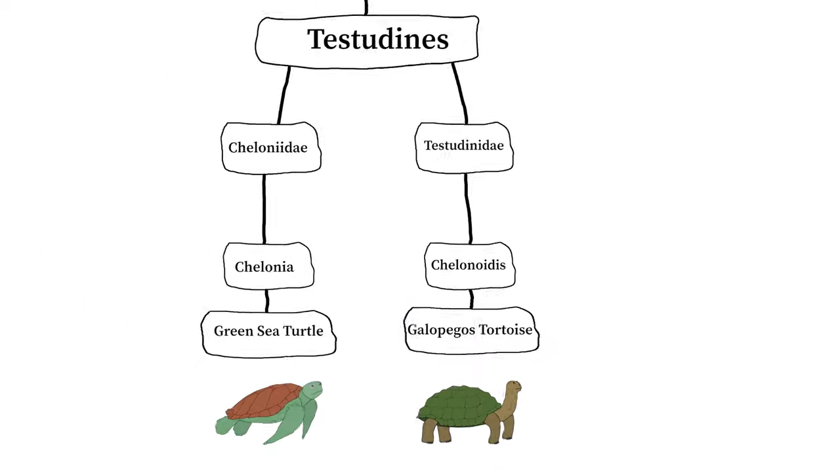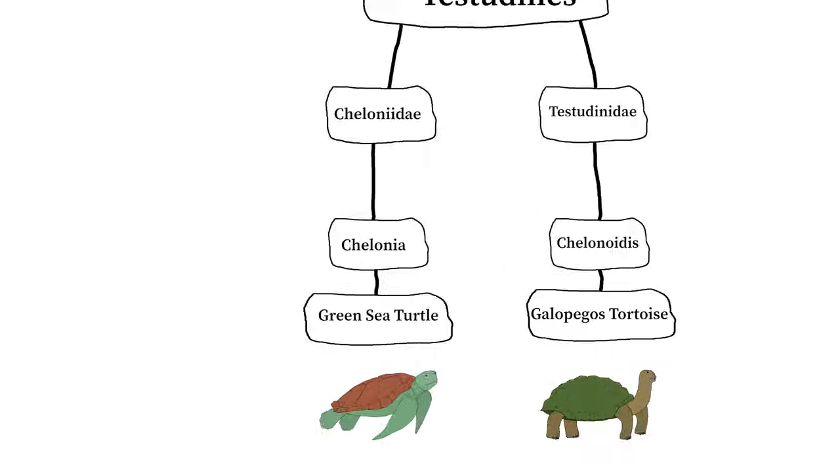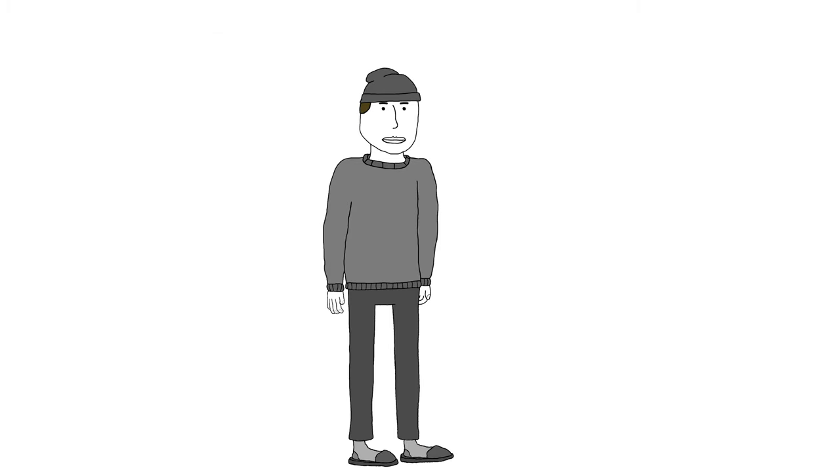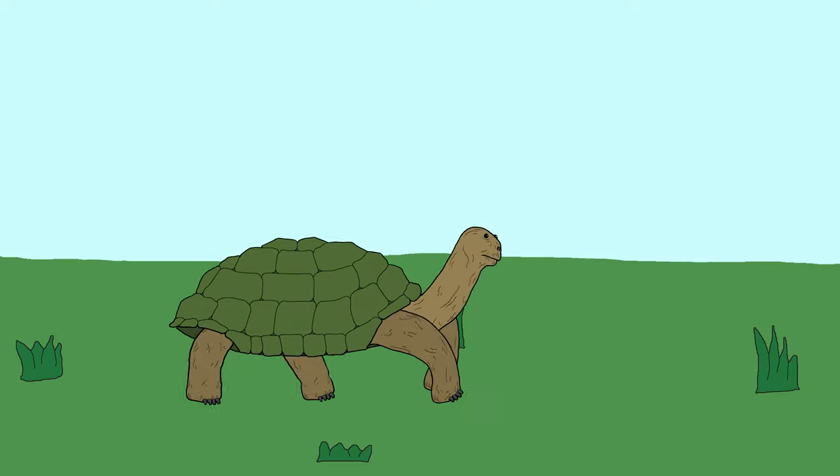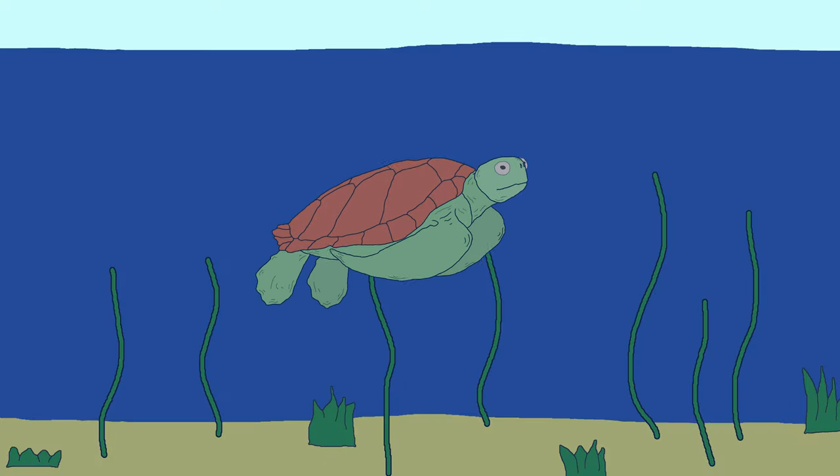Tortoises fall into the order of Testudines, which includes turtles. Although some might use those two words interchangeably, they are different. Simply put, tortoises are land-dwelling and turtles live in water.